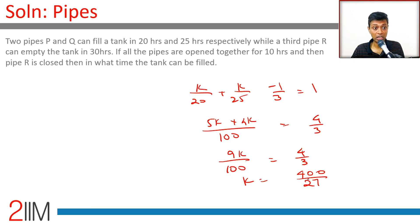They're saying then pipe R is closed, what time the tank can get filled. Already they have been opened for 10 hours - if all the pipes are open together for 10 hours and then pipe R is closed, what time the tank can get filled?